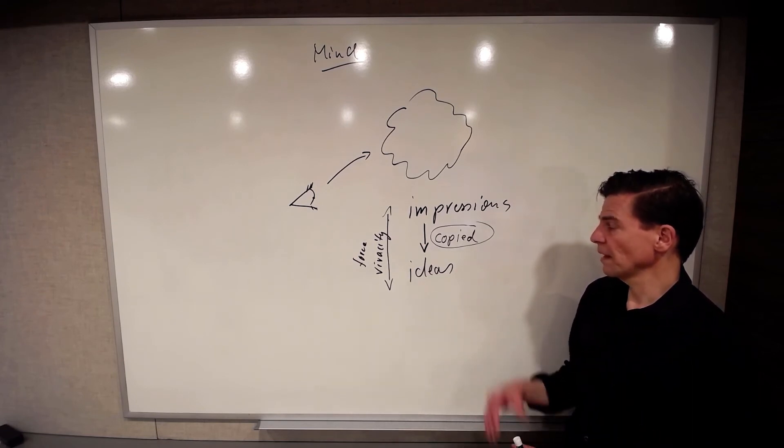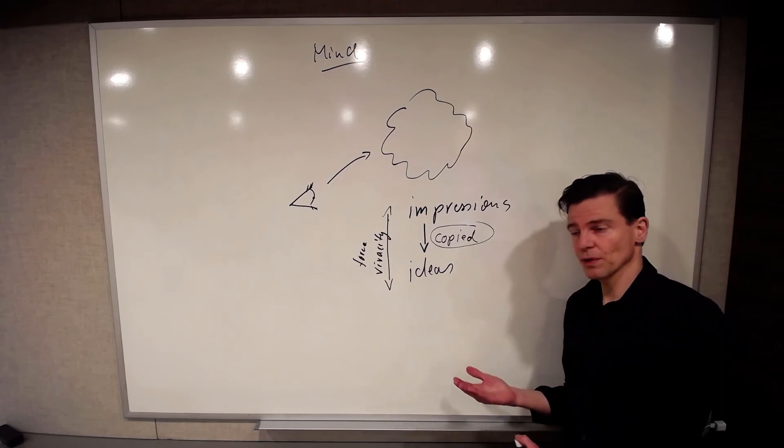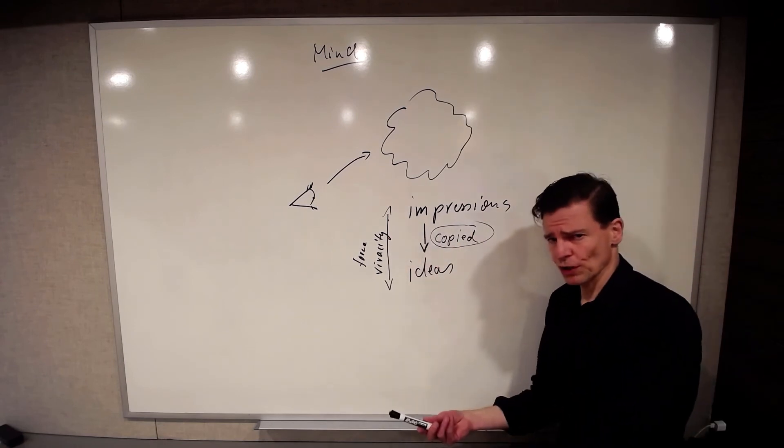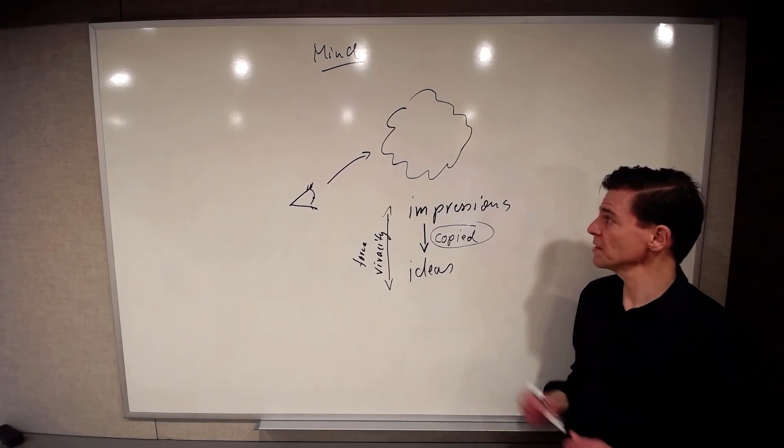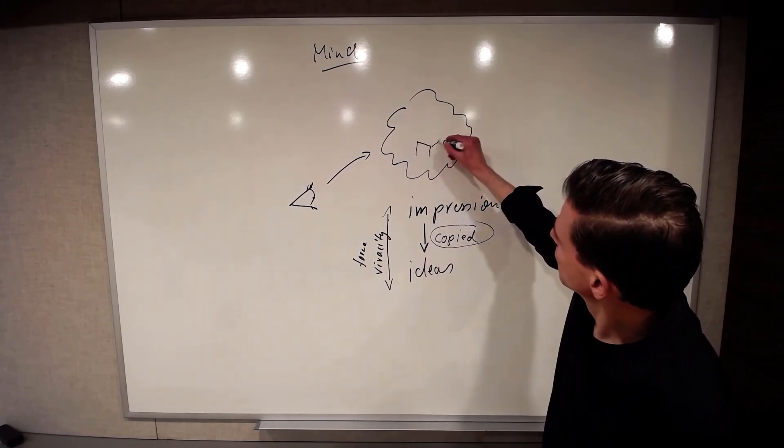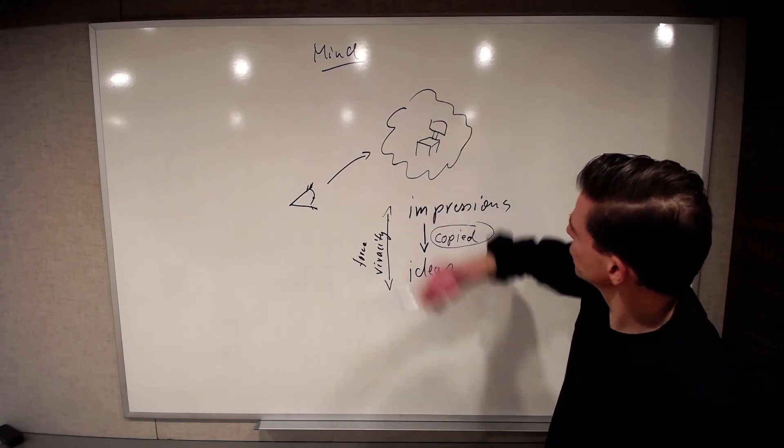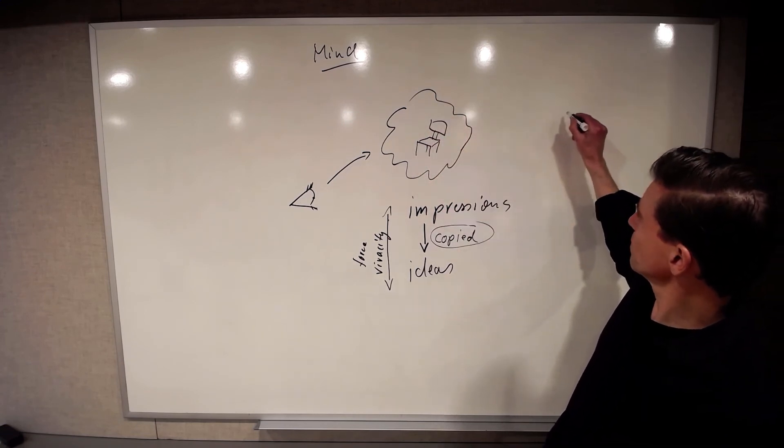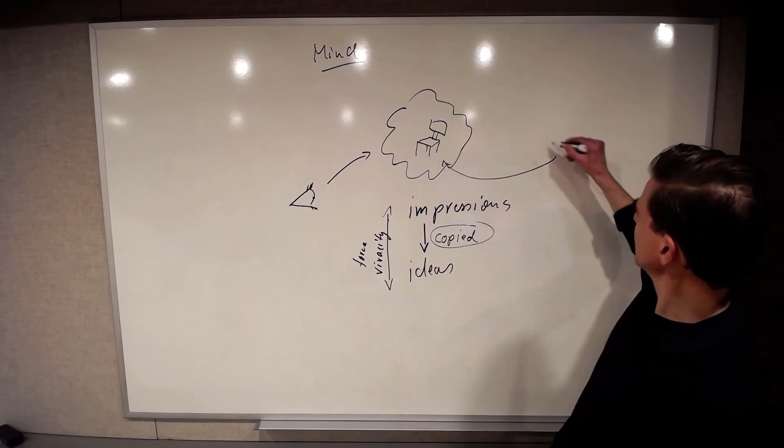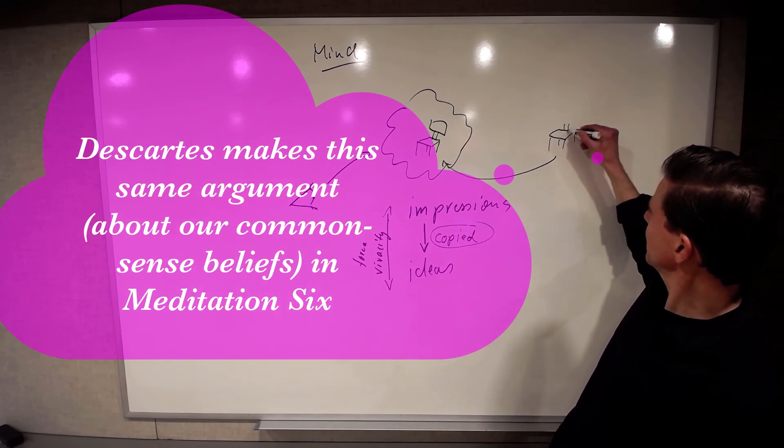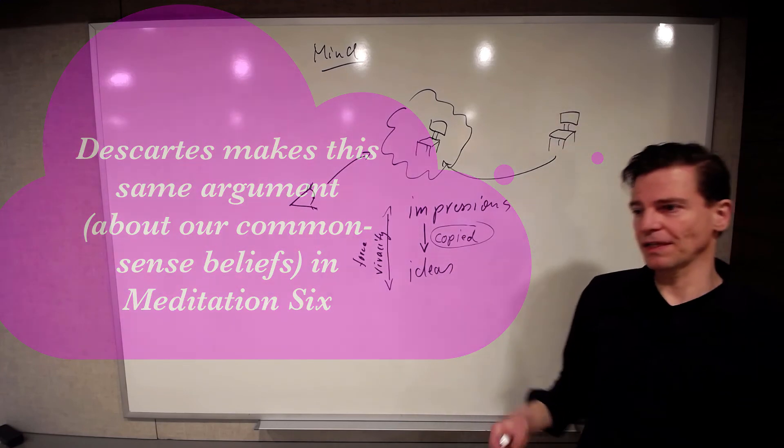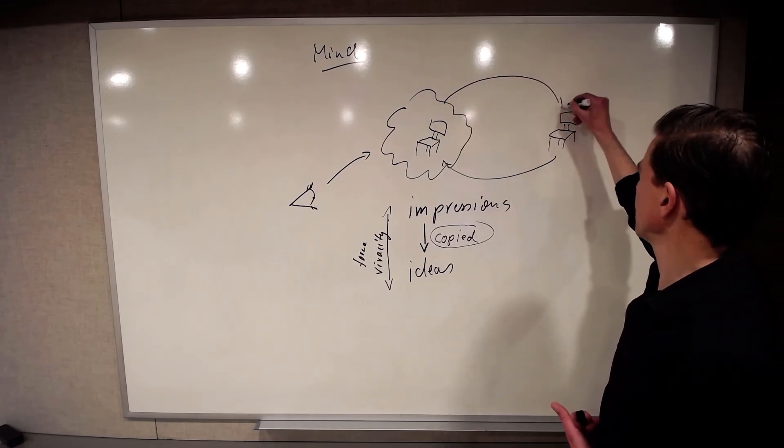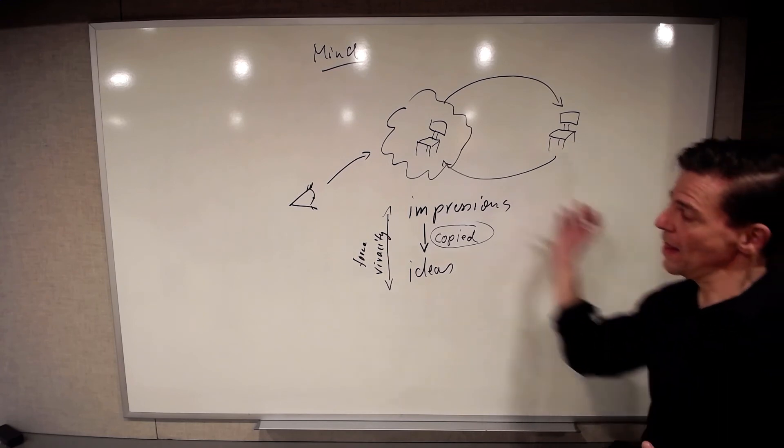Now, and I say this in part because one way you might want to motivate the vivacity of the impressions is to say, well, what Hume means by impressions are really sensory impressions. And why do they have vivacity? Well, because if I have, back to my chair, if I have the visual perception of a chair, that's forceful and vivacious because there's a chair there, right? There's a currently existing object in the external world impinging on my senses. And my representation of this thing is of it just as it is. That's what explains the vivacity.